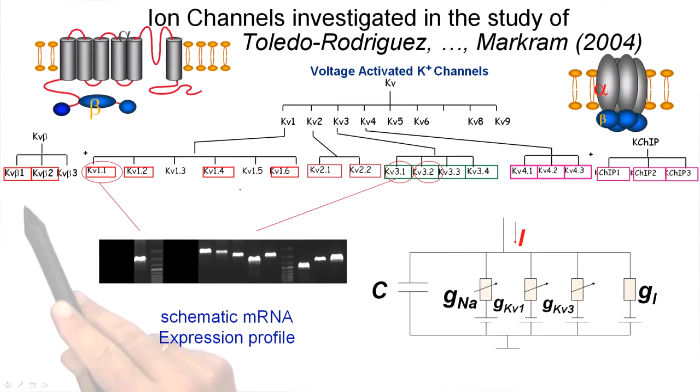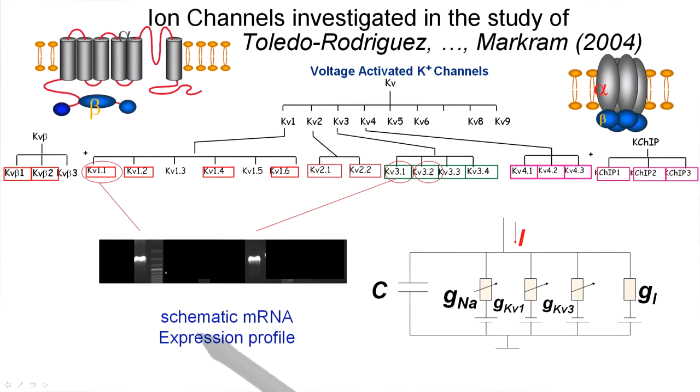Now, if you test for all these different ion channels in parallel, as was done in the study of Toledo-Rodriguez in the Markram lab, then you see which channels are currently present or currently in the process of being built inside the neuron. Some are present, some are not present.